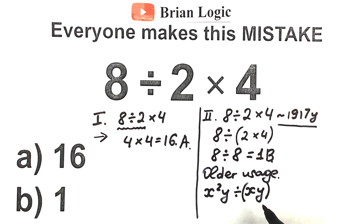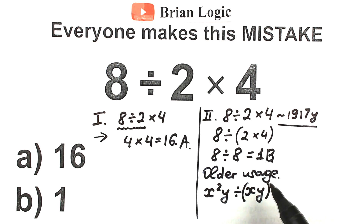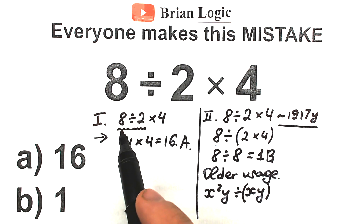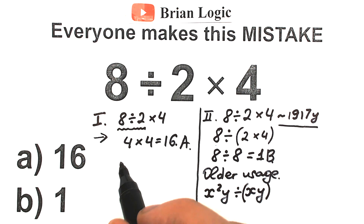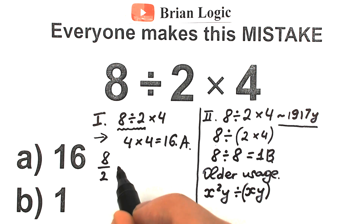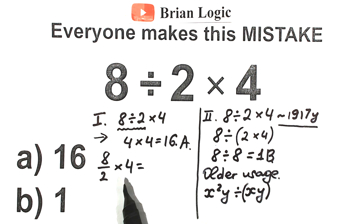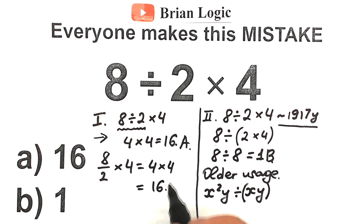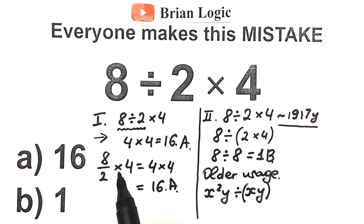This older usage does come up sometimes, but you just need to know about it — you don't need to use it all the time because calculators don't work like that nowadays. Some students say, let's write 8 divided by 2 as a fraction and times 4 — maybe something changes. But it changes nothing. 8 divided by 2 as a fraction still equals 4, and 4 times 4 equals 16, which is option A. It doesn't matter whether you write it as a fraction or not — we get 16.